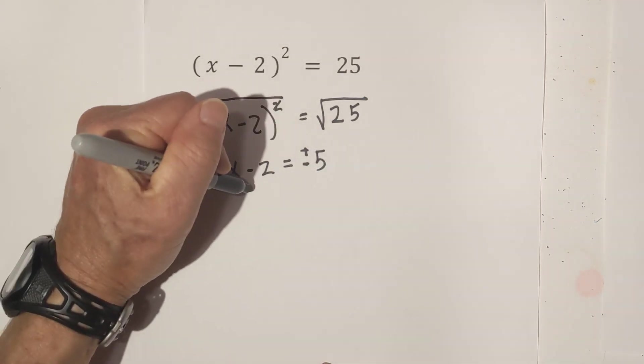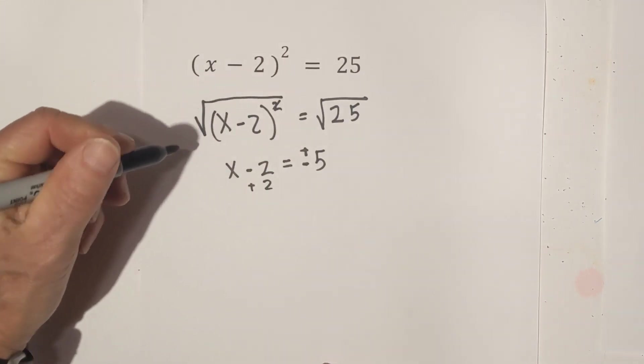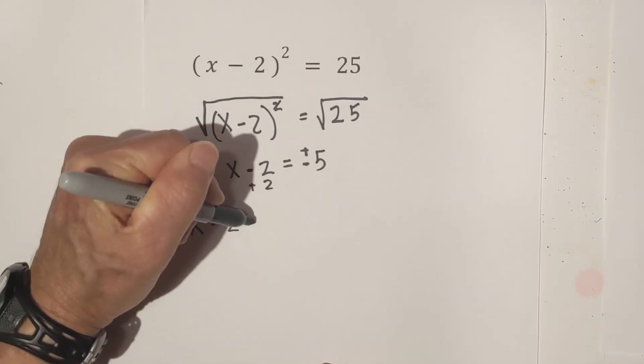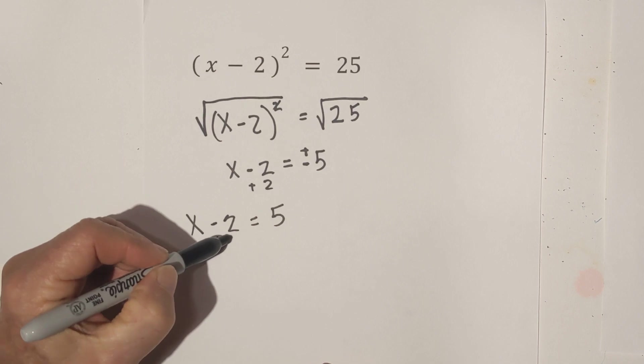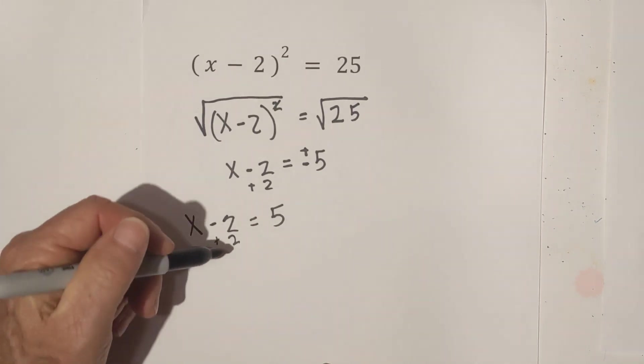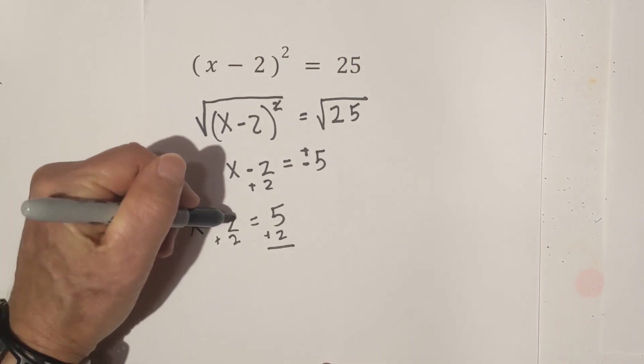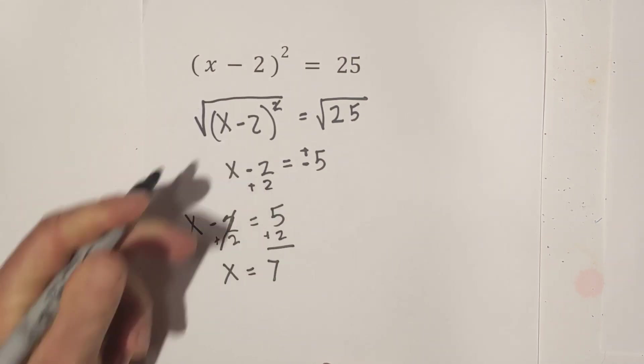So now what we will do is we will solve it for both a positive 5 and a negative 5. So what we're going to do is we're going to add 2. And so let's work the first one over here. We have x minus 2 equals 5. So we're going to add 2 to both sides. And so these cancel. So it becomes x equals 7.